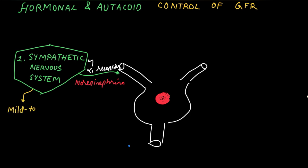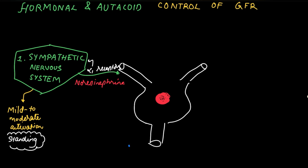There are two types of activation of the sympathetic nervous system: mild to moderate, and severe. Mild to moderate activation occurs during standing — for example, standing from a sitting position. Please remember that mild to moderate activation has little or no change in GFR.